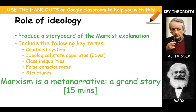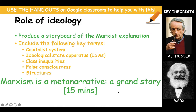Using the Google Classroom handouts, I want you to tell me the role of ideology. We have two Marxist theorists here and I want you to produce a storyboard of the Marxist explanation. Include the following key terms: the capitalist system, ideological state apparatus, class inequalities, false consciousness, and structures. Althusser came up with ideological state apparatus — understand what he means by it and what in our day-to-day lives keeps us in our position. Marxism is a grand narrative. I'll give you 15 minutes, using BBC Bitesize Sociology and the Google Classroom handouts.